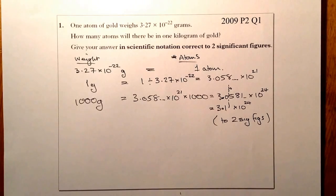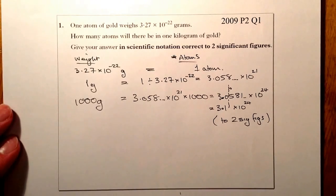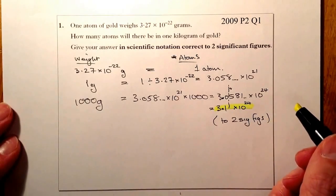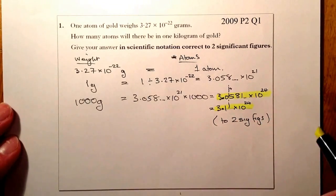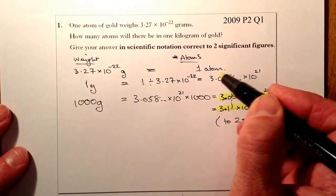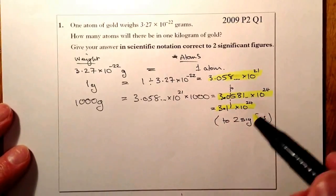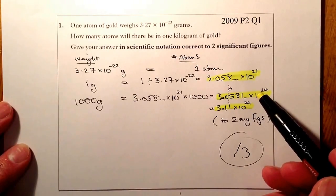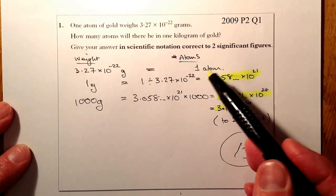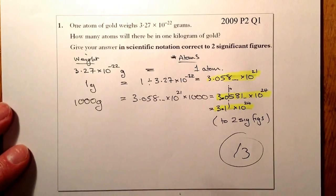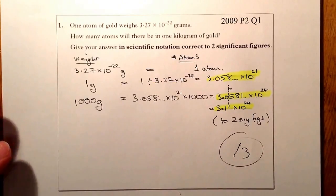Let's look at the marks for this question. It's a 3-mark question. You get one mark for the unrounded answer, one mark for the final rounded answer, and the way it's marked is: as long as you get those two marks, that's two marks. For either dividing 1,000 by 3.27 times 10 to the minus 22, or the method shown here, that gives you your three marks.